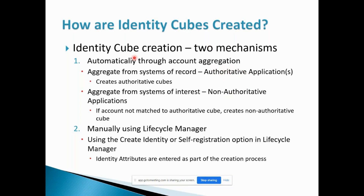With authoritative applications, whatever records are there we can read and create the Identity Cube. Non-authoritative is something SailPoint cannot completely trust for populating identity attributes. If data is available for a user but the user isn't in SailPoint, it won't automatically create — instead, a SailPoint admin can check whether the account should be created, and manual action will be taken accordingly.